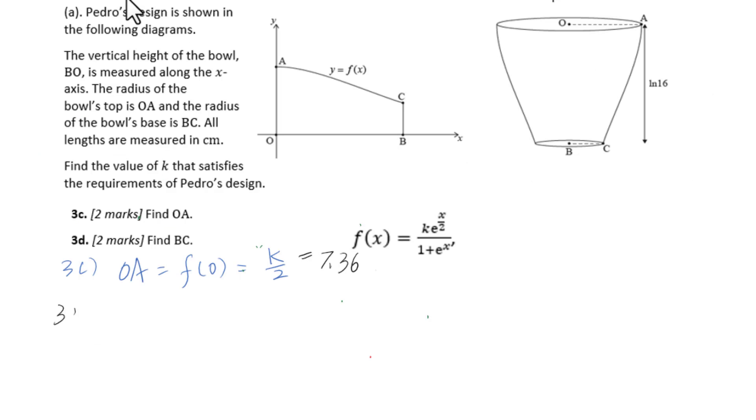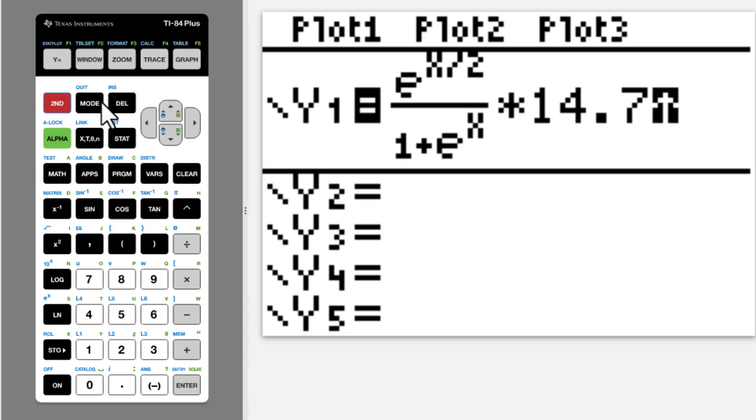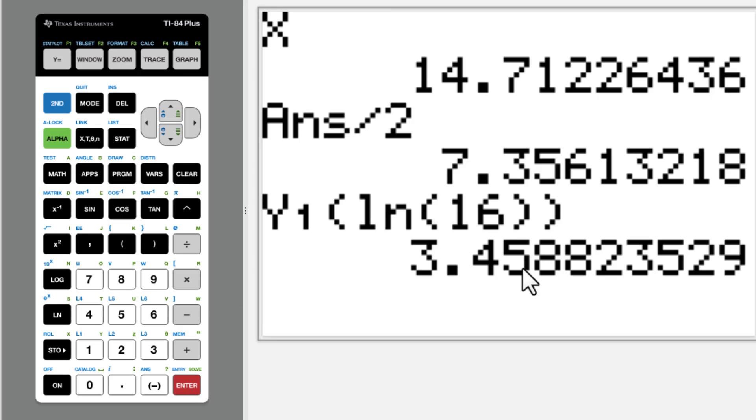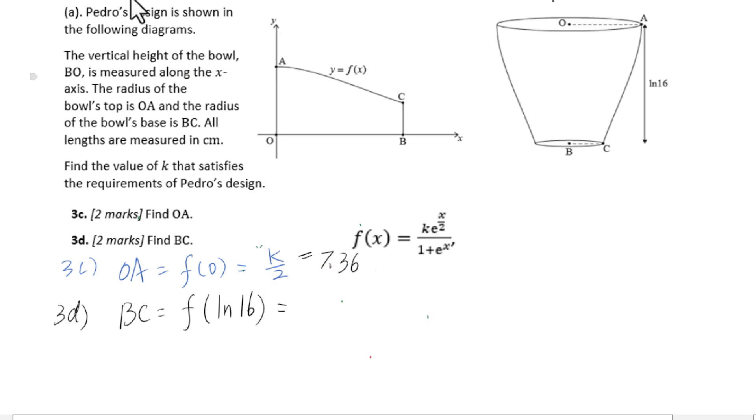Let's go to 3d. Find BC. BC equals f of natural log of 16. Let's put the function into y1. x enter, enter. 3.46. So BC equals 3.46 centimeters. Don't forget the unit.